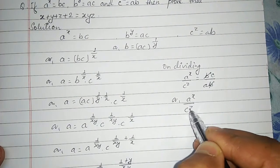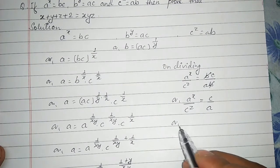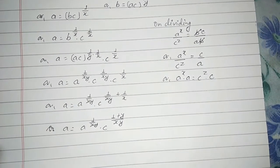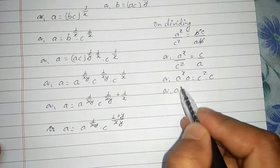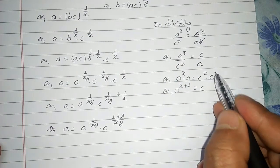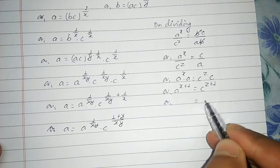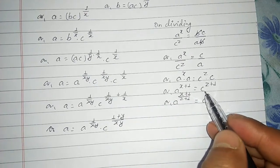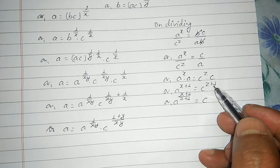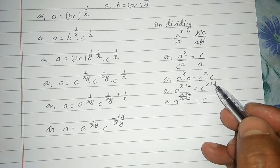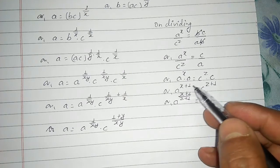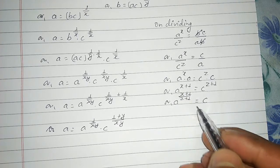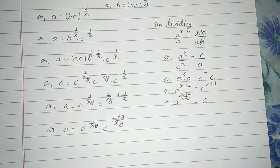Cross-multiplying: a to the power x times a equals c to the power z times c. Same base means powers are added, giving a to the power x plus 1 equals c to the power z plus 1. Therefore c in terms of a is: c equals a to the power x plus 1 divided by z plus 1.